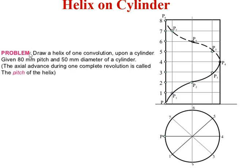We will solve a numerical on this topic. The statement is: draw a helix of one convolution upon a cylinder given 80 millimeter pitch and 50 millimeter diameter. The statement can also be stated as: draw a helix for a cylinder having 50 millimeter diameter and 80 millimeter height, meaning the height of the cylinder becomes the pitch. If pitch is given as 60 millimeter instead, you draw the helix only up to 60 millimeter, not up to 80 millimeter.